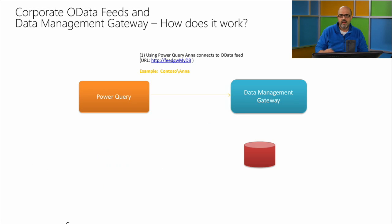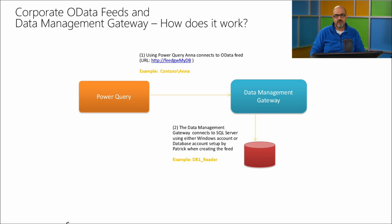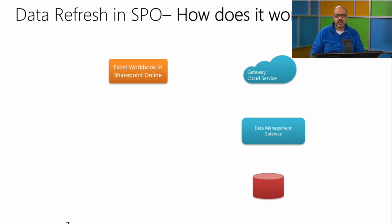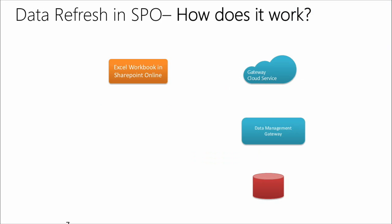How does the gateway work? You're in Power Query, and using Power Query you can connect to an OData feed published by the gateway. That OData feed connects to the data management gateway, which in turn connects to the data source — whether it's a SQL Server or Oracle server in the back end. It executes your query, retrieves the data, and publishes it back to Power Query. At the same time, you can create a scheduled refresh capability that enables you to publish data models in Power BI and set up refresh at any point in time to get a fresh copy of your data.